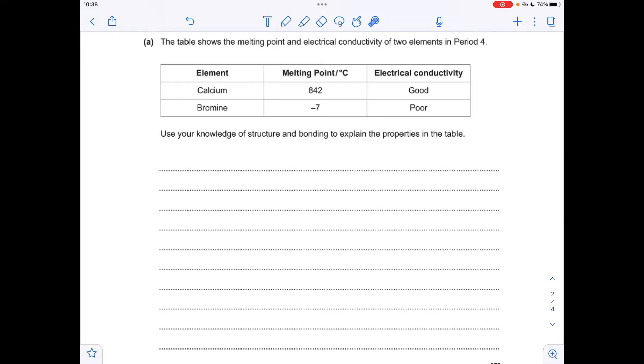Moving on to the next question, we've got to explain the melting point and the electrical conductivity for calcium and bromine and link it all to structure and bonding. Got to be really careful with your wording here - you must call the particles by the correct names. We'll start with calcium. Calcium's got a giant metallic lattice structure so it's got this high melting point because there's a very strong electrostatic attraction in the lattice between the calcium 2+ ions and the delocalized electrons.